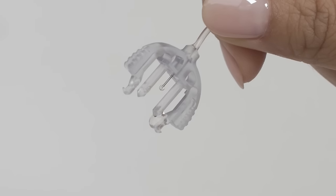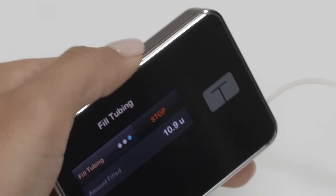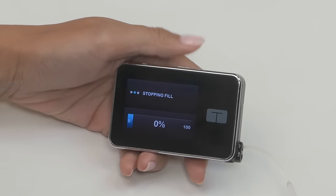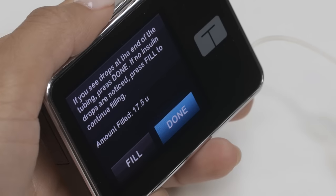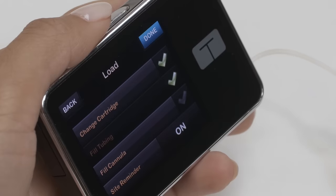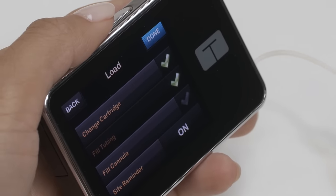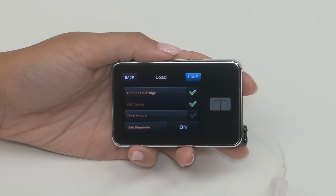Once you notice three drops come out of the end of the tubing and you're satisfied that there are no large air bubbles left, tap stop. Your pump will ask you to confirm that you saw drops at the end of the tubing. If you saw drops, tap Done. If you stopped the fill process before you saw drops, tap Fill to continue.